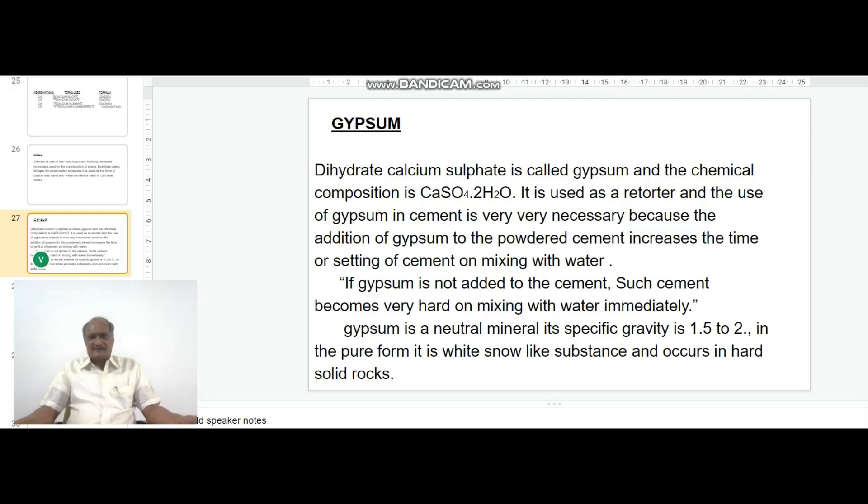It is used as a retarder, and the use of gypsum in the cement is very necessary, because the addition of gypsum to the powder cement increases the time of setting of cement when it is mixed with water. If gypsum is not added to the cement, such cement becomes very hard on mixing with water immediately.